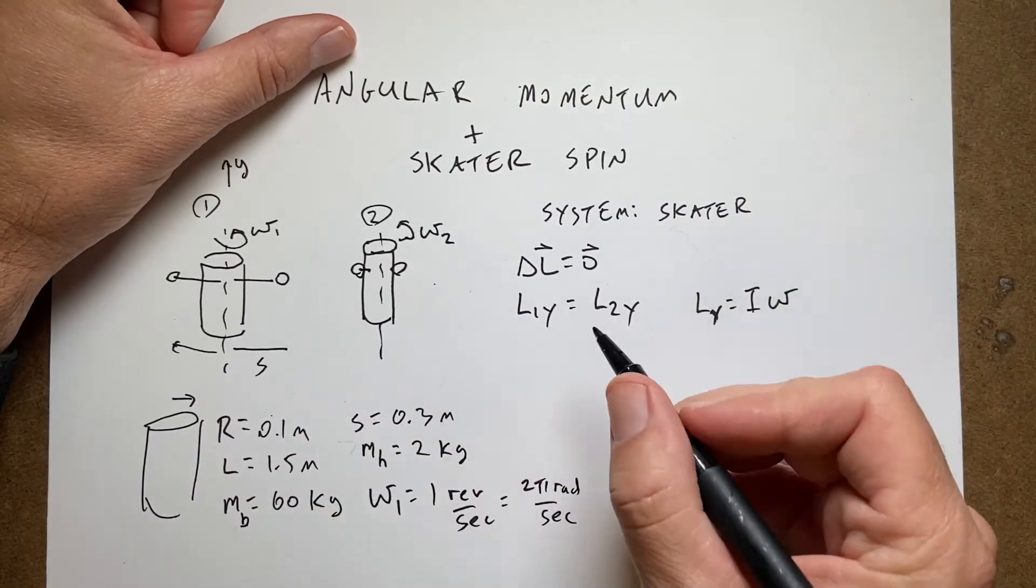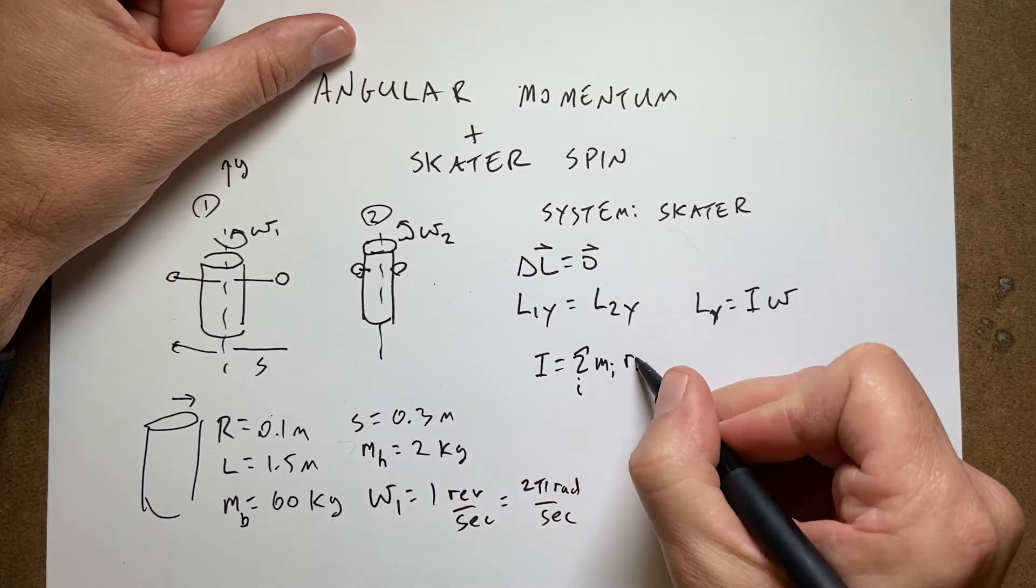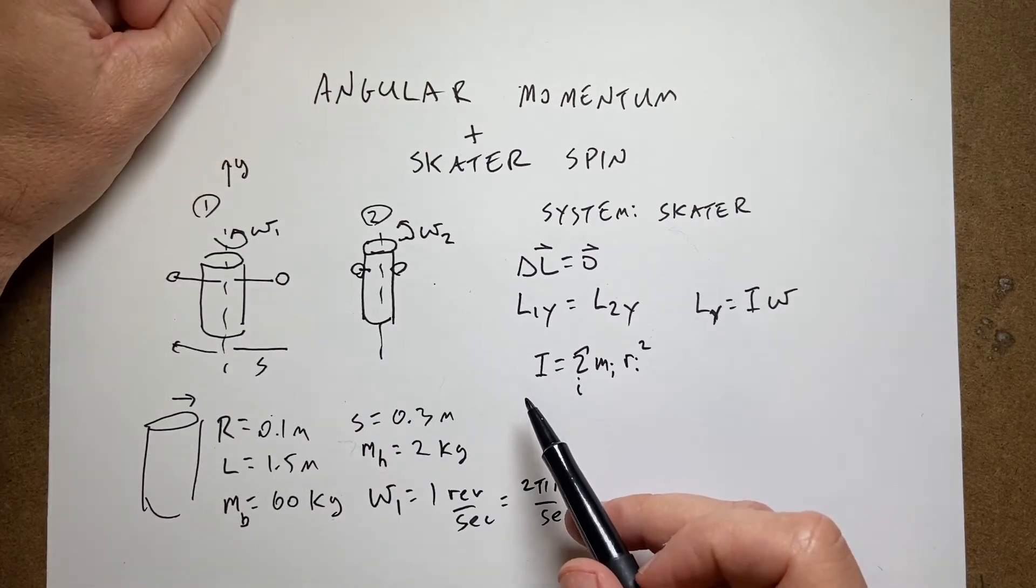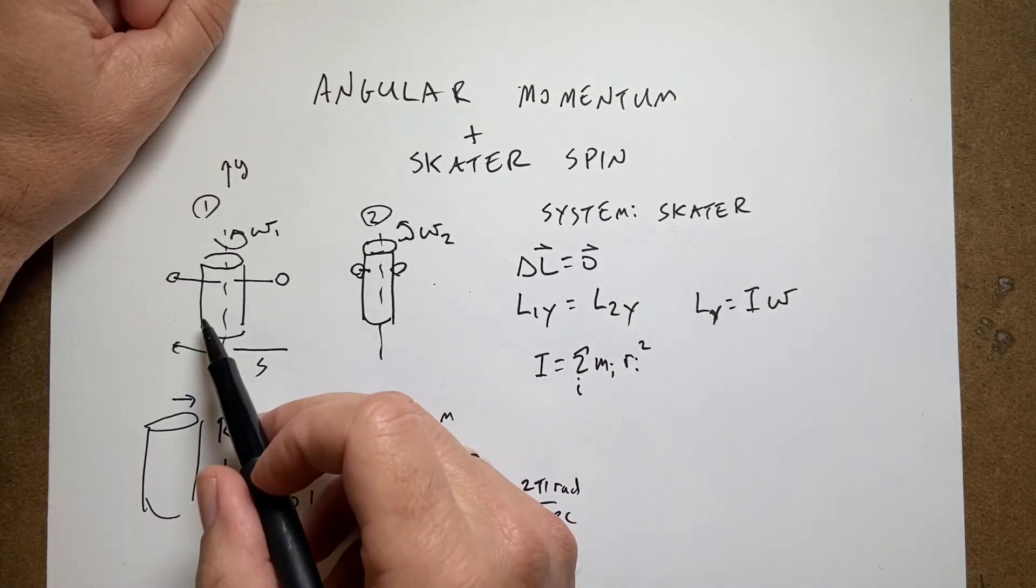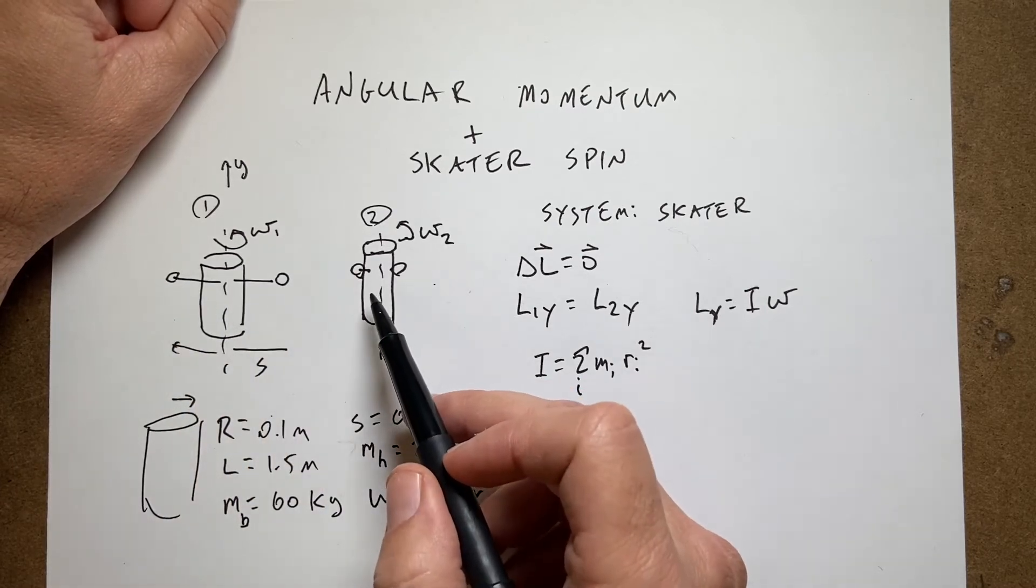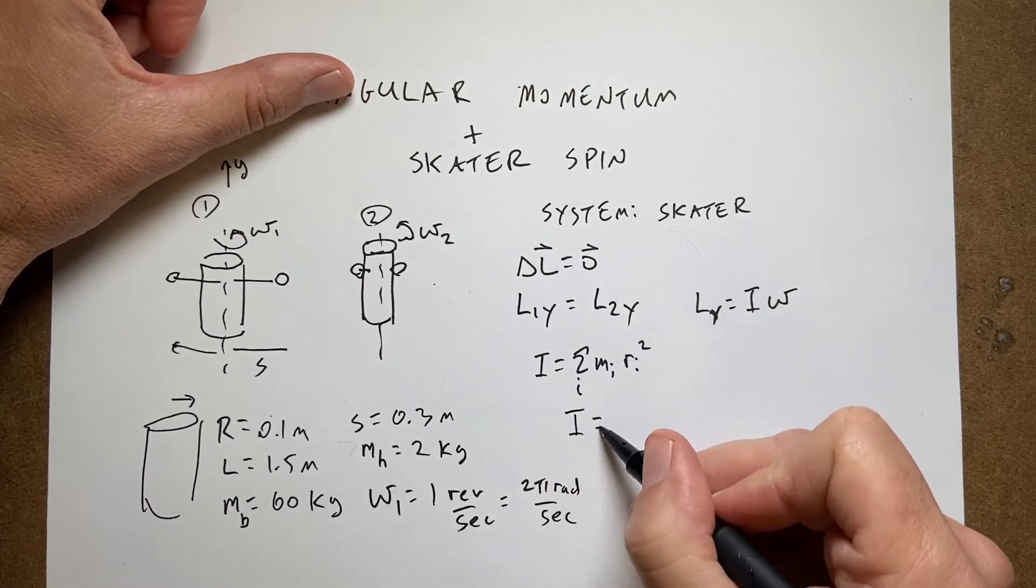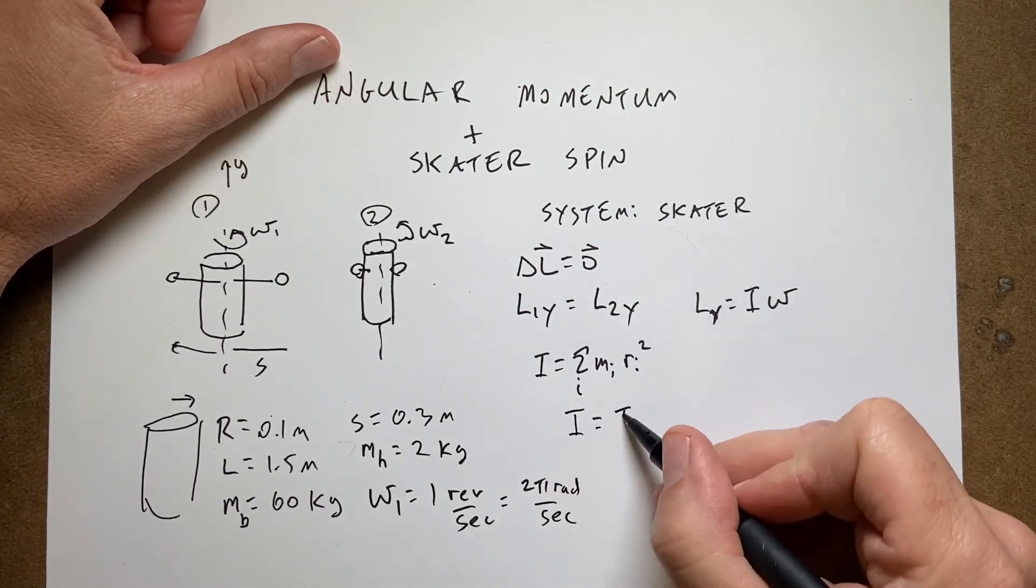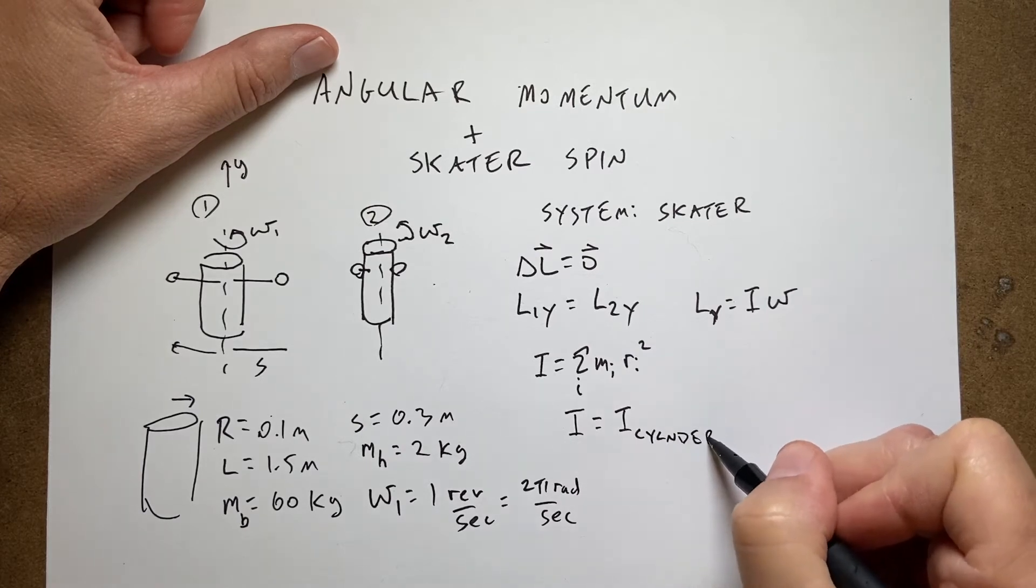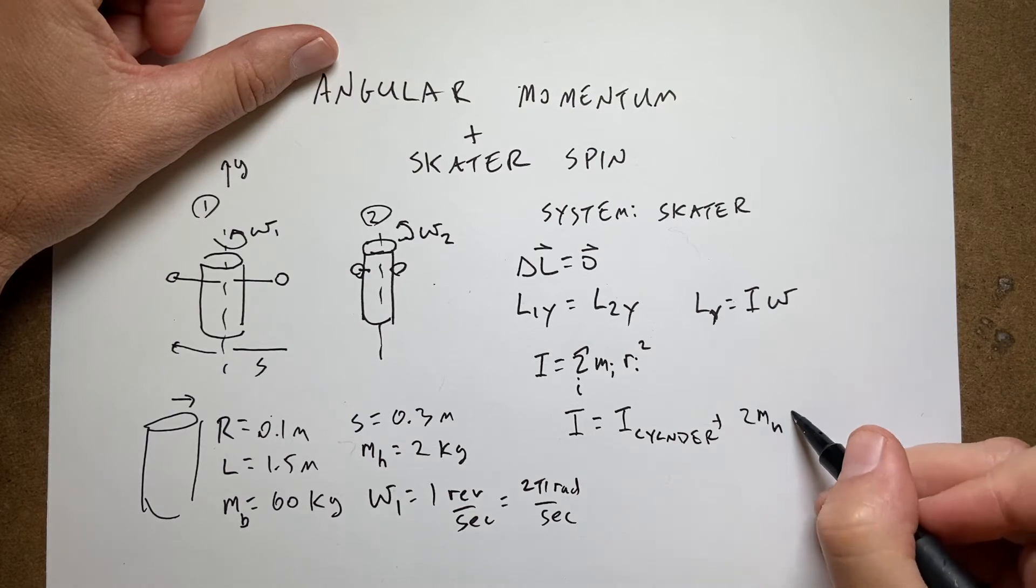So what's this I? In general, I is the sum over i: mi·ri². So it's a measure of how the mass is distributed about the axis rotation. So clearly that changes because here the masses are at a different distance than they are here. And in fact we could write this. I could write the moment of inertia of the skater is going to be I_cylinder plus 2·m_hand·s².